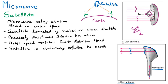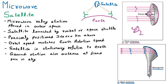Since the satellite appears to be stationary above the same point, the ground station antennas always aim at a fixed point in the sky. The antenna direction on earth remains constant because the satellite always appears to be at the same position.